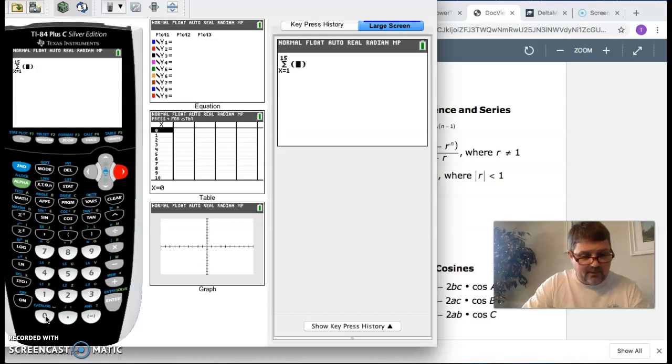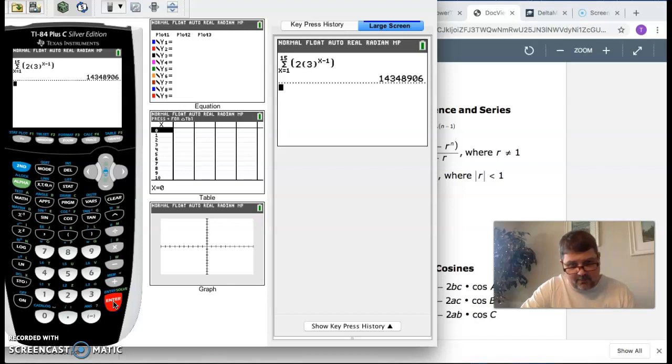We're going to plug our formula in. If you remember what the formula was, I think it was 2 times 3 to the x minus 1. And that's it. This thing's ready to go. And that's a big number, you know. $14,348,906. But no problem for this technology.